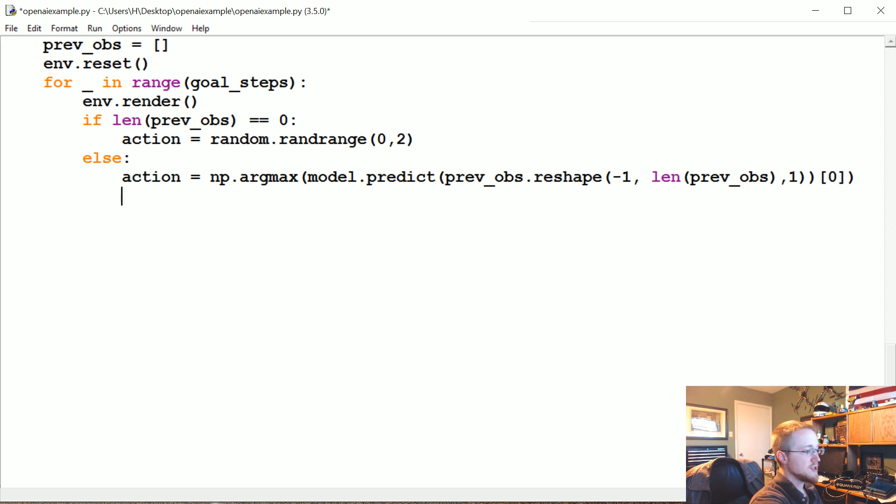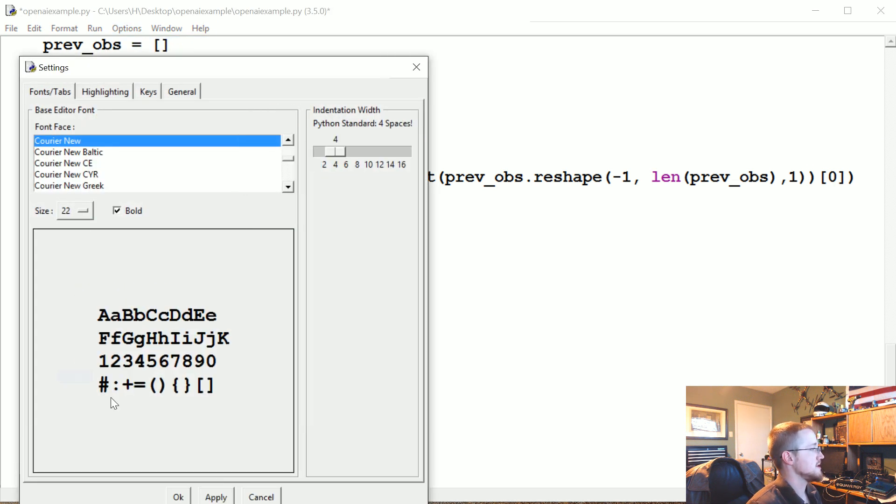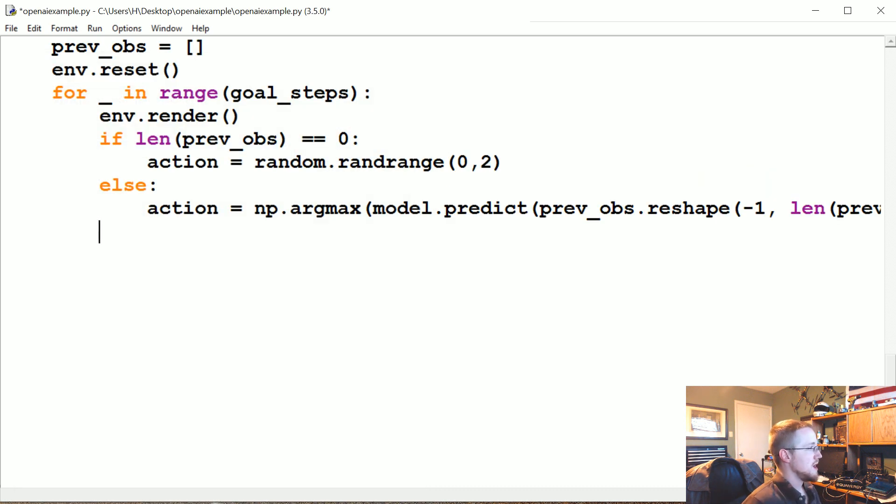Outside of that else, what we're going to say is choices.append whatever the action is. We want to just know what all of the choices are. The reason we want to do this is since we're not headless, a lot of times what can happen is your neural network will just converge in and only predict one thing, or it will predict like 90% one thing, which can be really frustrating. So we kind of want to know what is the ratio our network is predicting here.